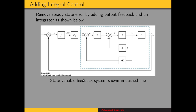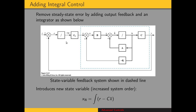So we're going to add integral control to our toolbox, and this will allow us to remove the steady state error. We're going to do this by adding output feedback — we take the output and feed it back. The difference between that and our input R is an error, and we'll add an integrator to that error. We have introduced a new state variable xn, and this integrator has increased the system order, so we have one more pole to place whenever we add integral control.